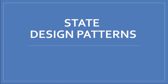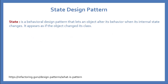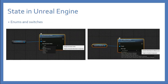Let's discuss the state design pattern. It's a behavioral design pattern that lets you alter the object's behavior when the internal state is changed — changing the behavior of your class or object from one state to another. Inside Unreal, we have this in many ways. For example, we use enums. If you're already familiar with enums inside Unreal, it's basically changing the state of the behavior of the class from one state to another.